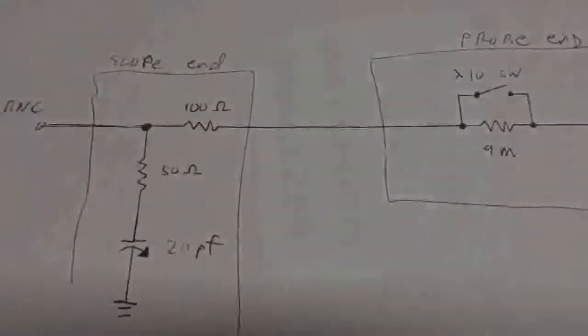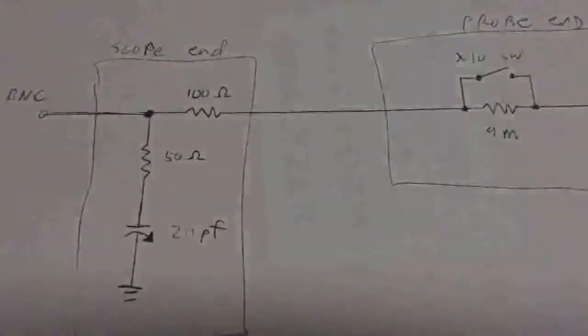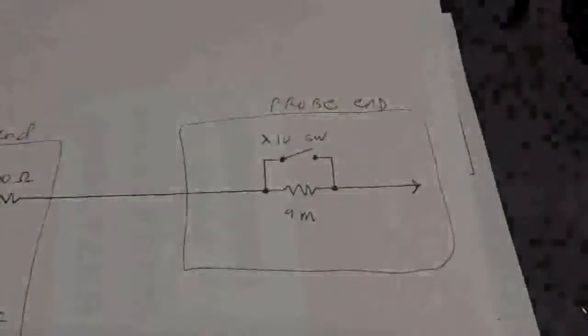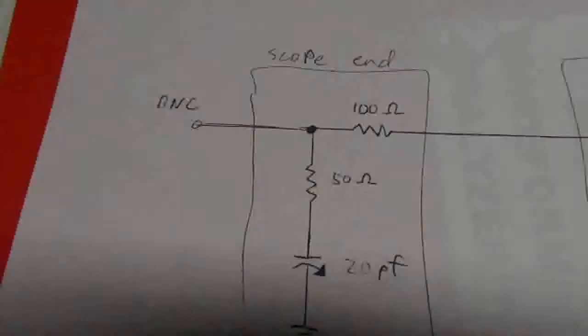Okay, so first up here we have the schematic of the P6100 probe. It has the time 10 switch in the probe itself. The other end with the BNC connector has a 100 ohm resistor, a 50 ohm resistor,